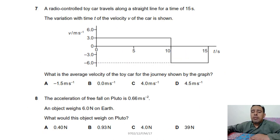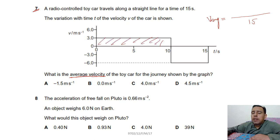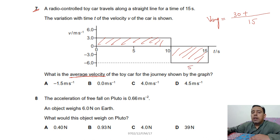Question 7: to get average velocity, use total displacement over total time. Total time is 15 seconds. Displacement is found from area under the graph: 3 × 10 = 30, plus 5 × 6 = 30, but directions are opposite so they cancel. The answer is zero. Option B is correct.